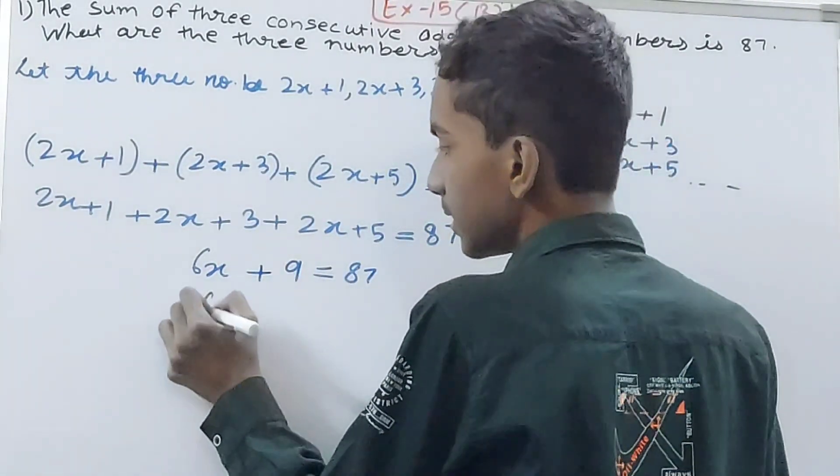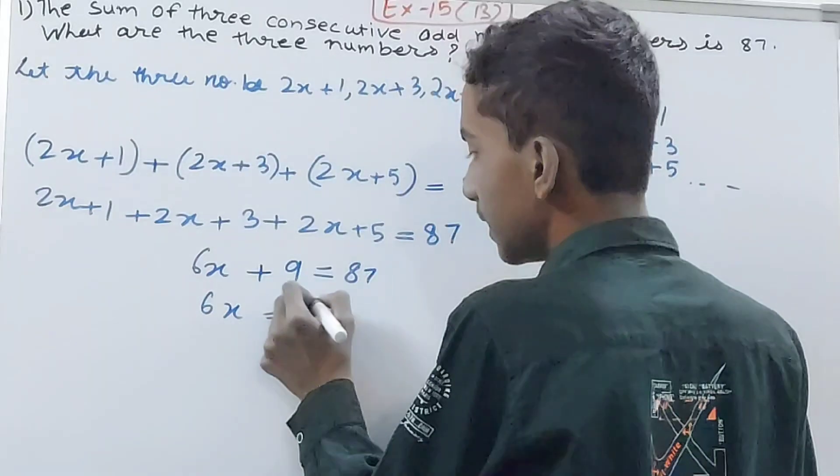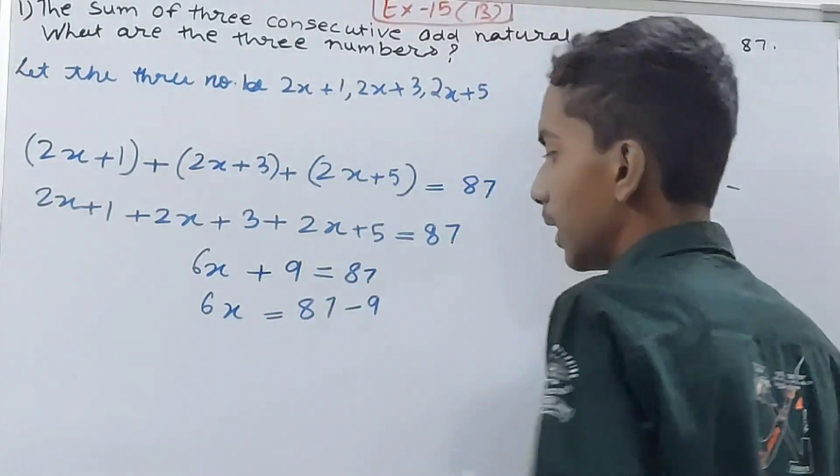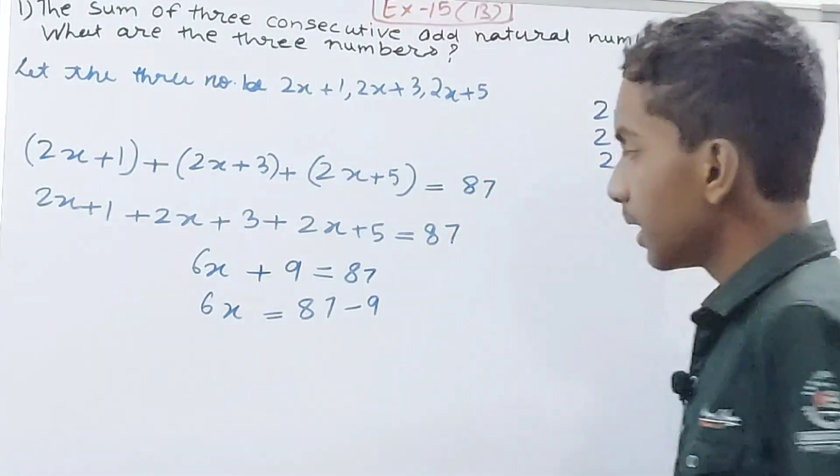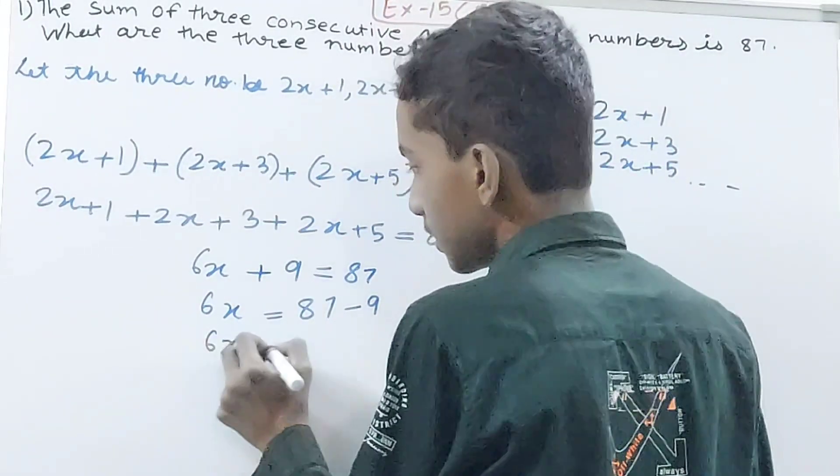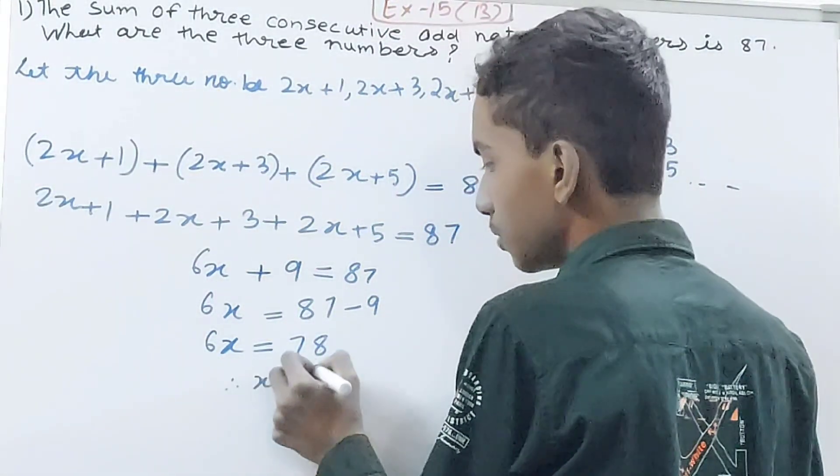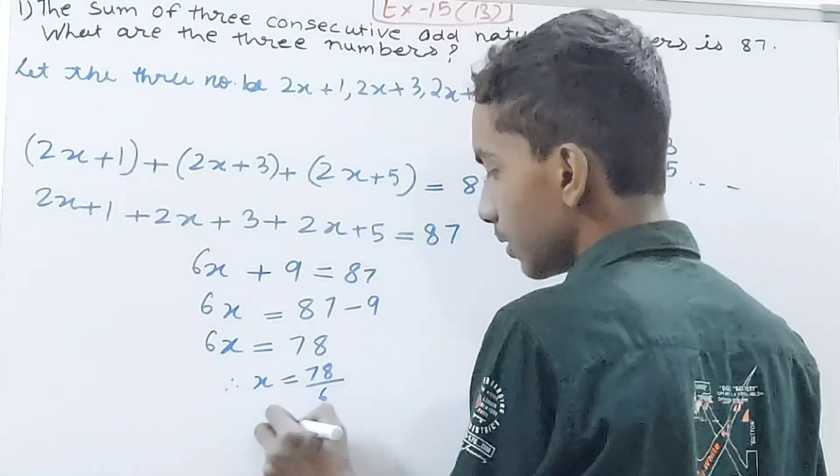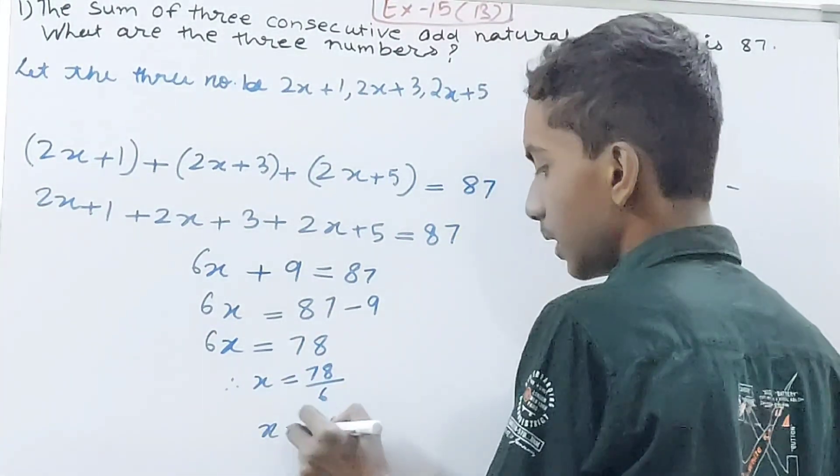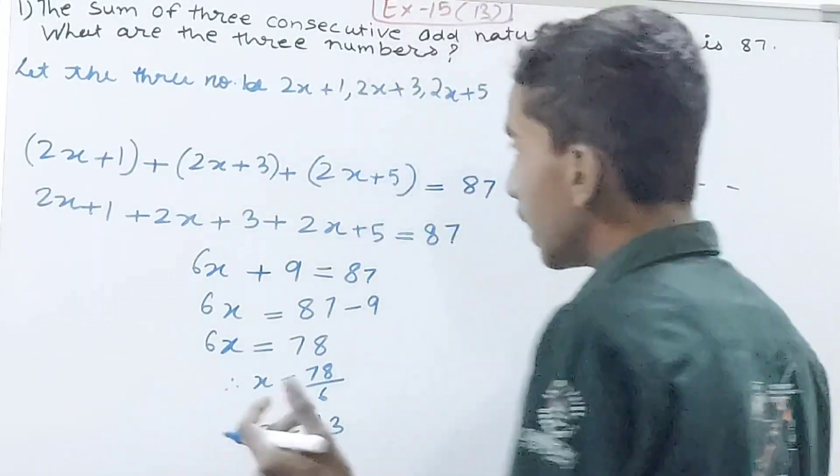6x = 87 - 9, so 6x = 78. Therefore x = 78 ÷ 6, so x = 13.